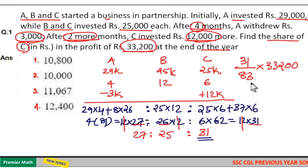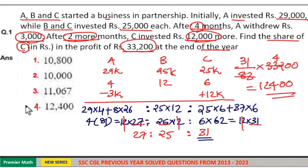Now 83 into 4 is 332. So 31 into 400 is equal to 4 into 3, 12, 12,400. So C's share is equal to 12,400. Option 4 is your answer.